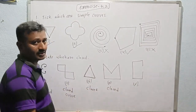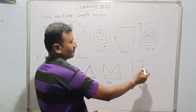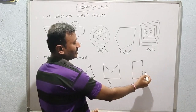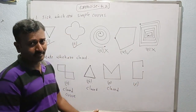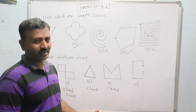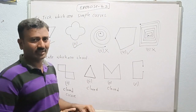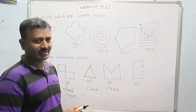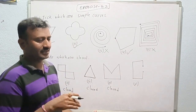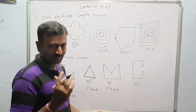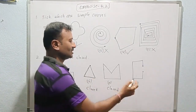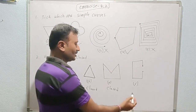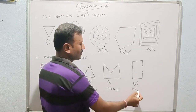Is this figure closed? No. Because the starting point and ending point are here and here respectively. We can start from any point and the other will be the end point. Both end points do not meet. So this is not closed.